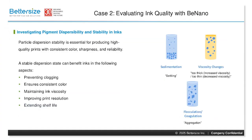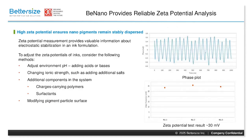The second case study investigates nano-sized pigment dispersibility and stability in inks, a core challenge in ink formulation. The B-Nano provides reliable zeta potential analysis, crucial for keeping pigments stably dispersed in inks. A phase plot and corresponding results from a nano pigment ink sample are shown here.